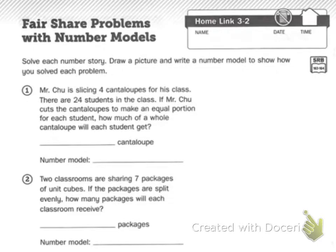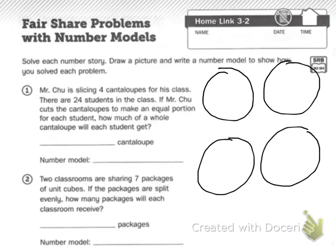Let's take a look at our homework. Fair share number problems with number models. Your directions say, solve each number story. Draw a picture and write a number model to show how you solved each problem. Mr. Chew is slicing four cantaloupes, so I'm going to draw four circles. Four cantaloupes for his class. There are 24 students in the class. If Mr. Chew cuts the cantaloupes to make an equal portion for each student, how much of the whole cantaloupe will each student get?